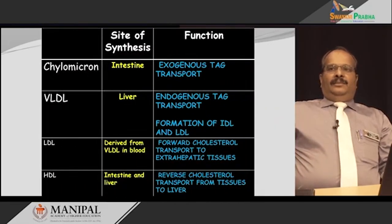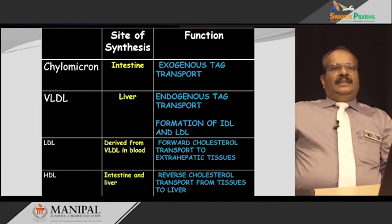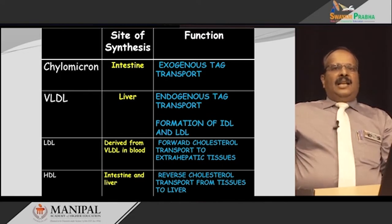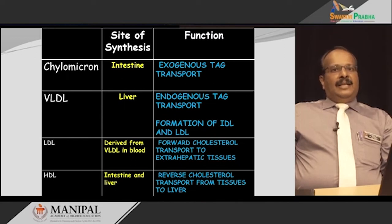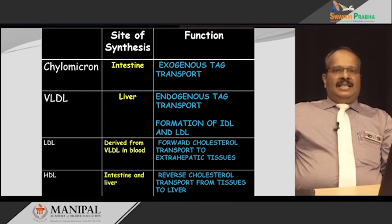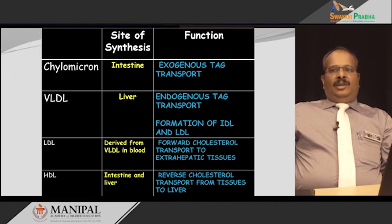Coming to the classification of lipoproteins, there are four major types. This classification is according to their density. They are chylomicron, very low density lipoprotein, low density lipoprotein, and high density lipoprotein. These lipoproteins differ in their size, shape, charge, protein and lipid content, and their site of origin.